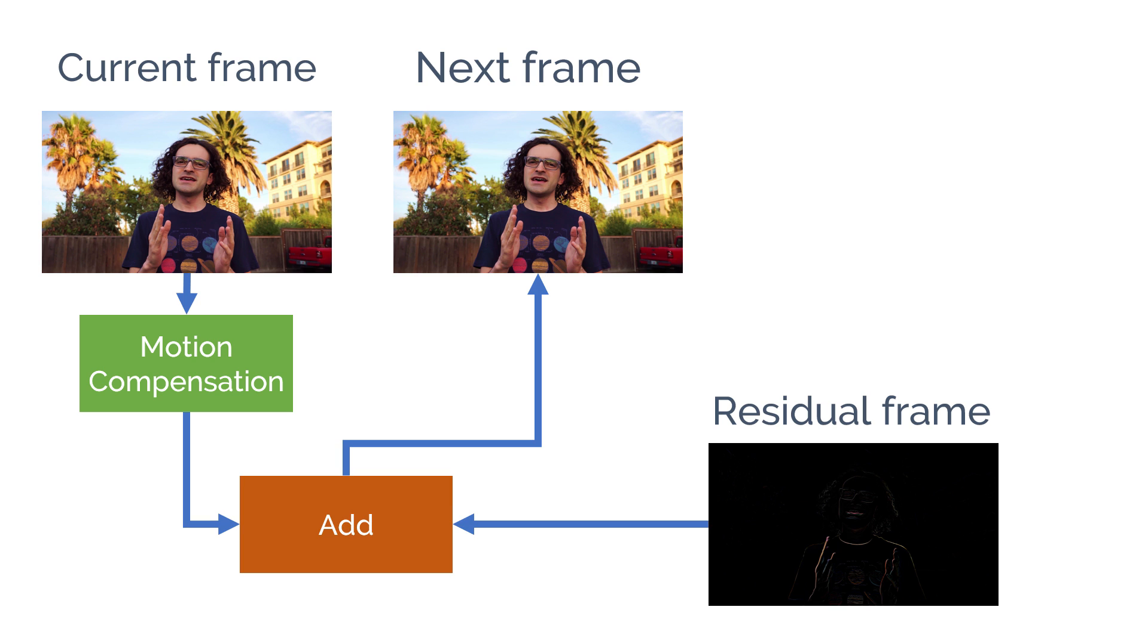When it's time to play this video, the decoder predicts the current frame by taking the previous reference frame, compensating for the motion using the motion vectors and adding the residual frame.